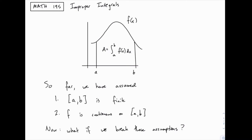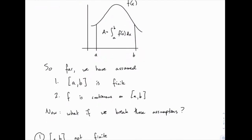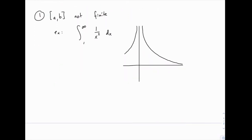In both cases, it turns out we're going to use limits to evaluate these integrals, so we'll need to review a little bit of limits from back in Calc 1 — but the limits we'll do here are relatively simple. So let's break these assumptions one at a time. The first assumption is that we're dealing with a finite interval, so let's assume we're not. Here's an example: we want to integrate the function 1 over x squared from 1 to infinity.